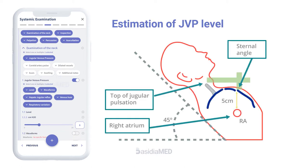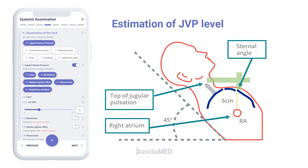Procedure for Estimation of JVP Level: The patient is reclining back at an angle of 45 degrees, with the head turned towards the left. A pen-like torch is pointed at a 45-degree angle towards the midline of the neck. The highest pulsable point of the distended internal jugular vein is identified. One ruler is kept at this level parallel to the ground, and another ruler is kept perpendicular to the first at the sternal angle, or the angle of Louis. The distance from the sternal angle to the intersection is measured.